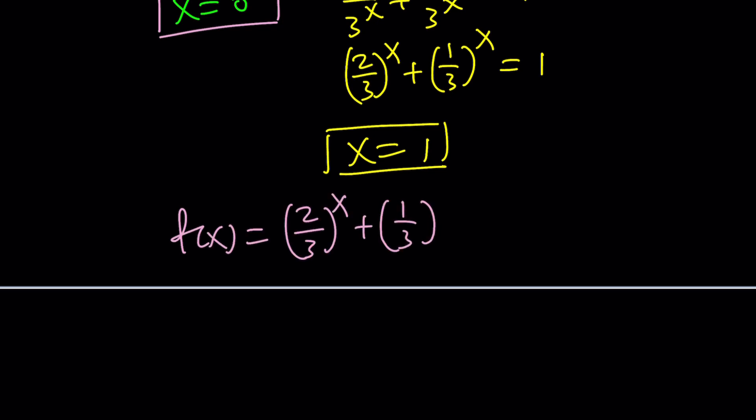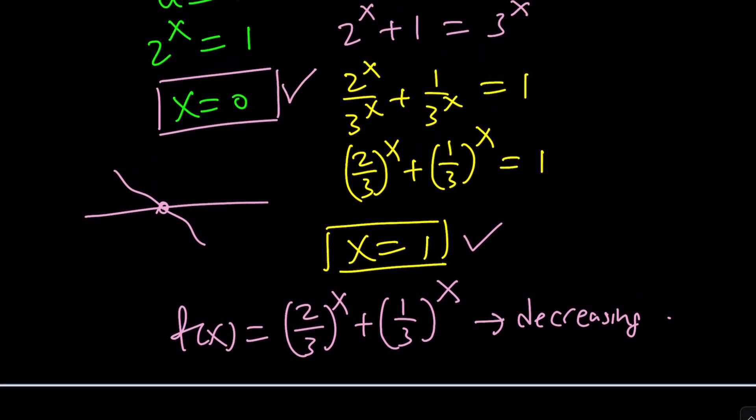You know why? Because if you set f(x) = (2/3)^x + (1/3)^x, you're going to realize that f(x) is the sum of two decreasing functions. Therefore, it is always decreasing. What that means is you're going to have a single solution. You have a decreasing function. It can only be intersected once by a horizontal line. Make sense? Therefore, there's only one solution and that's x = 1. But we already had x = 0, which means we should have two solutions. But are there any other solutions? I don't think so, right?